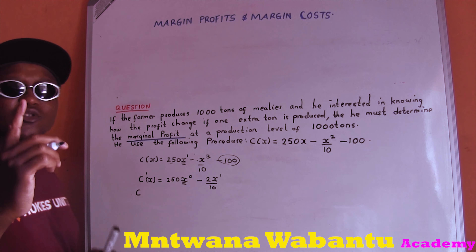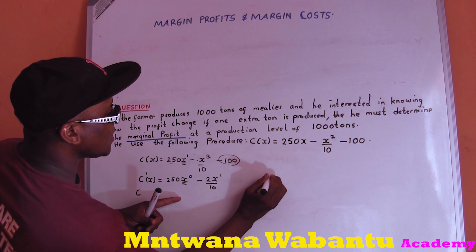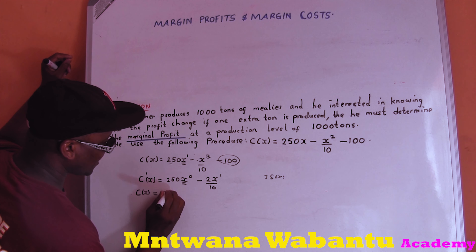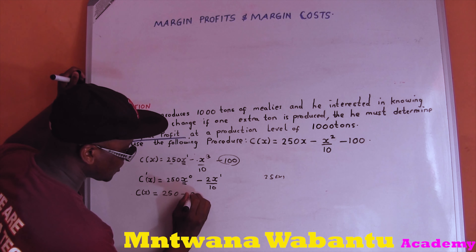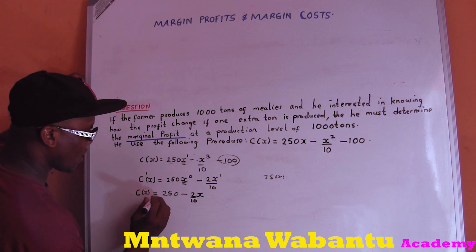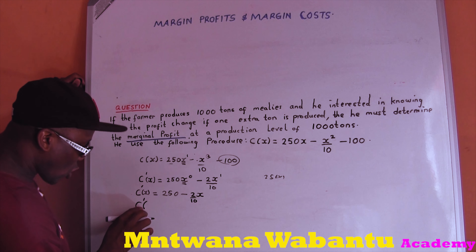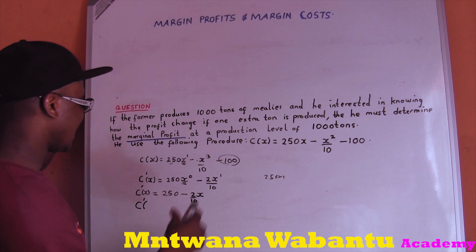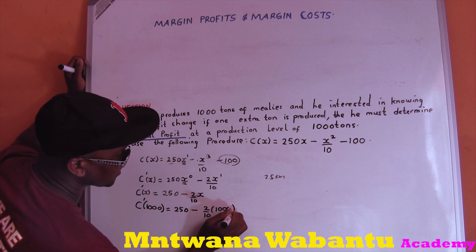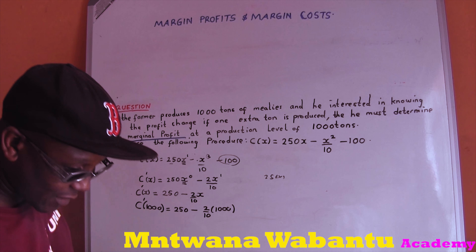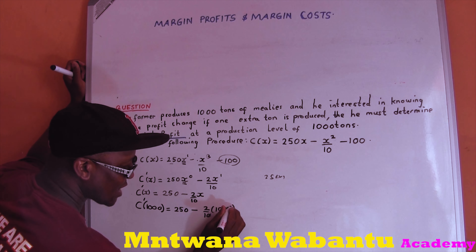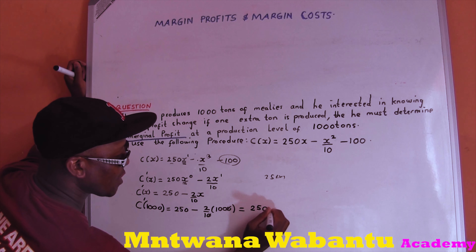For the second term, which number is before x? It's 1, because even if it's not written, there's always a 1. So take the power 2 to the front: 2 times 1 equals 2, write x, power becomes 2 minus 1 equals 1, over 8. The constant 100 has no x, so when you differentiate it becomes 0. The result is written as P prime of x — the prime tells you it's been differentiated.